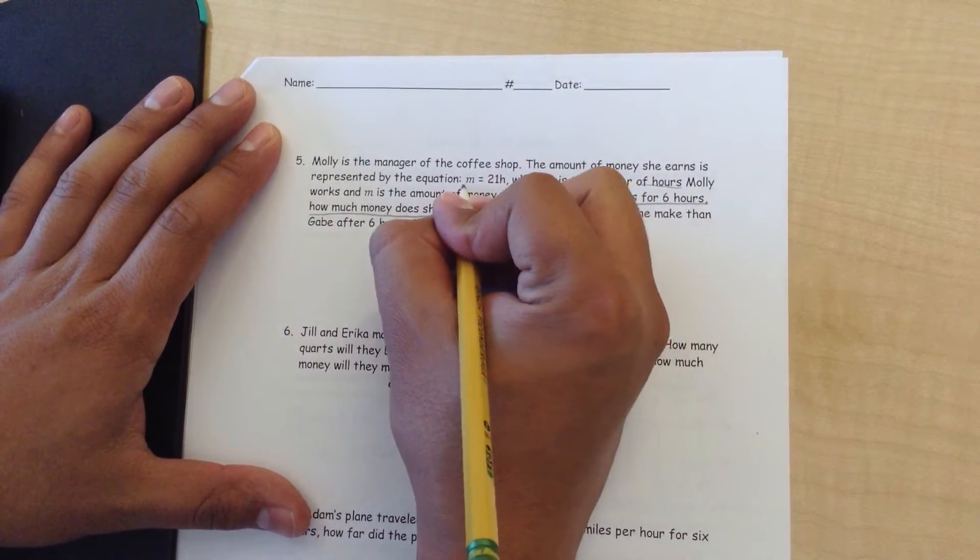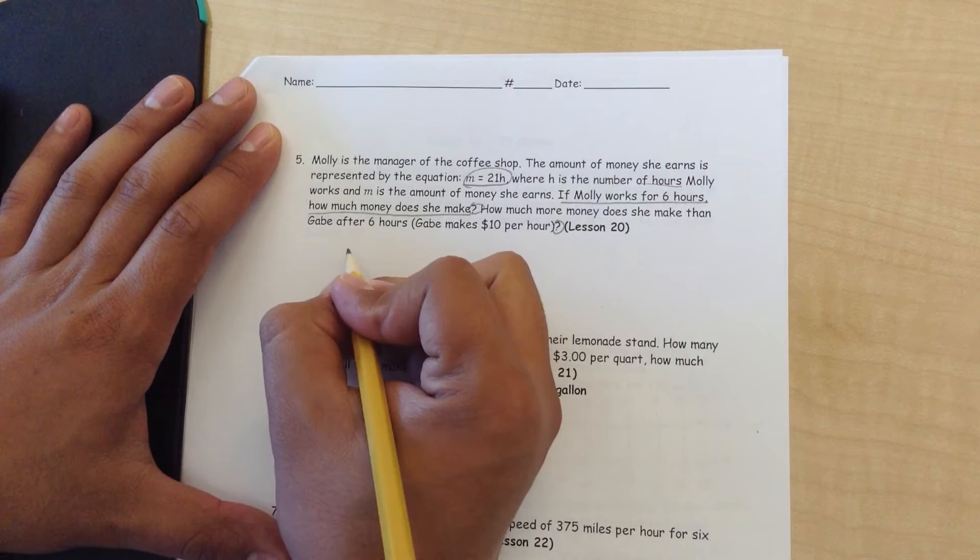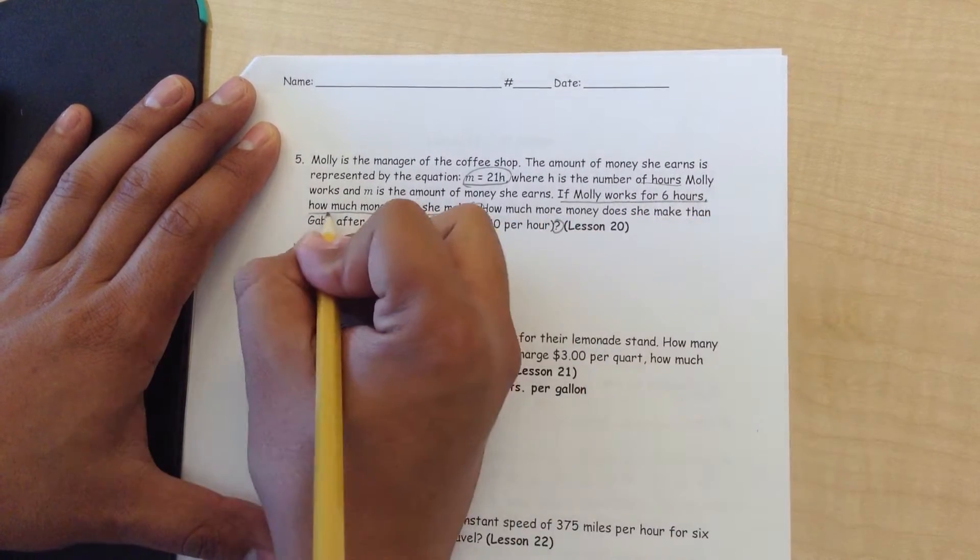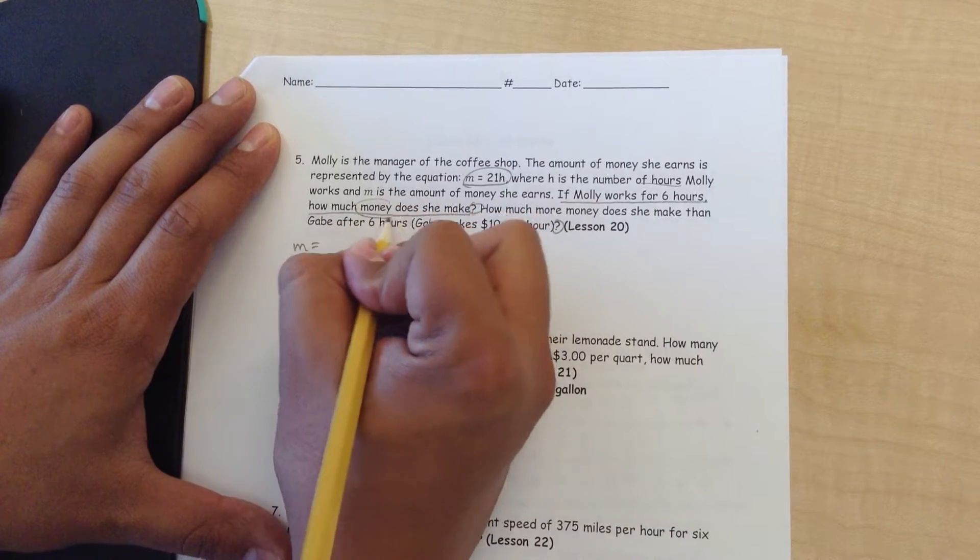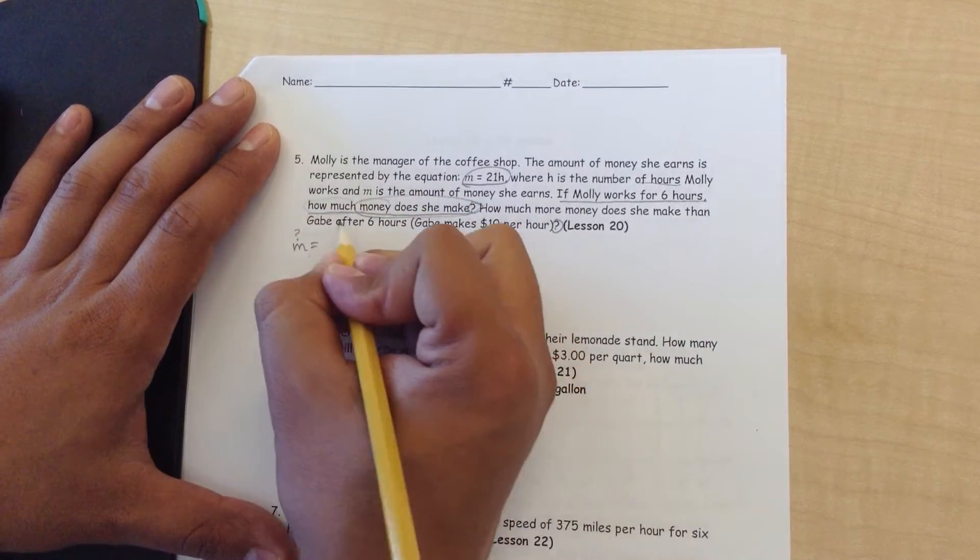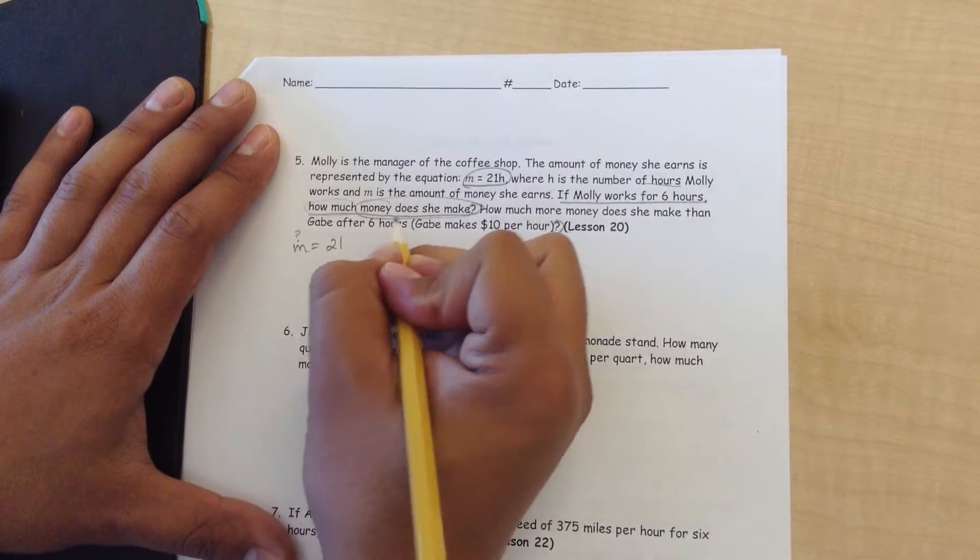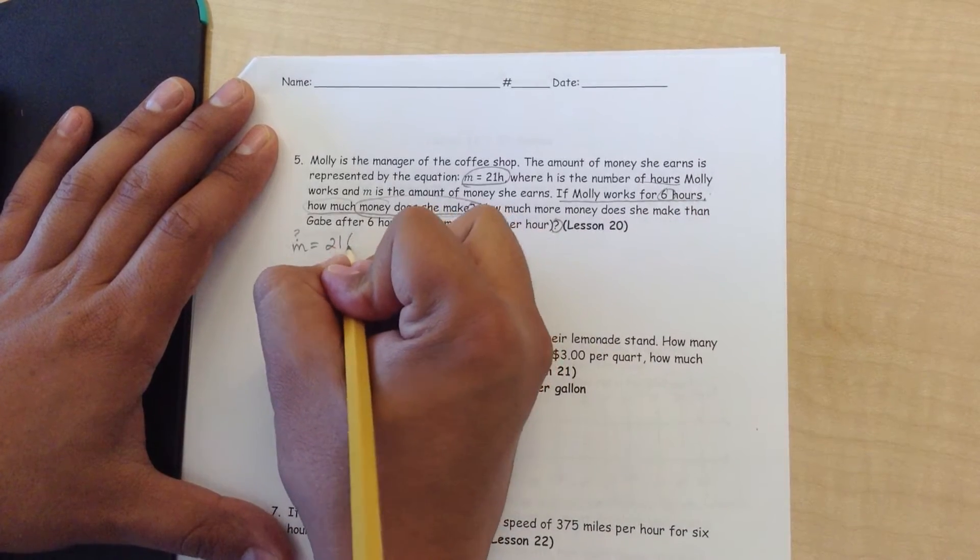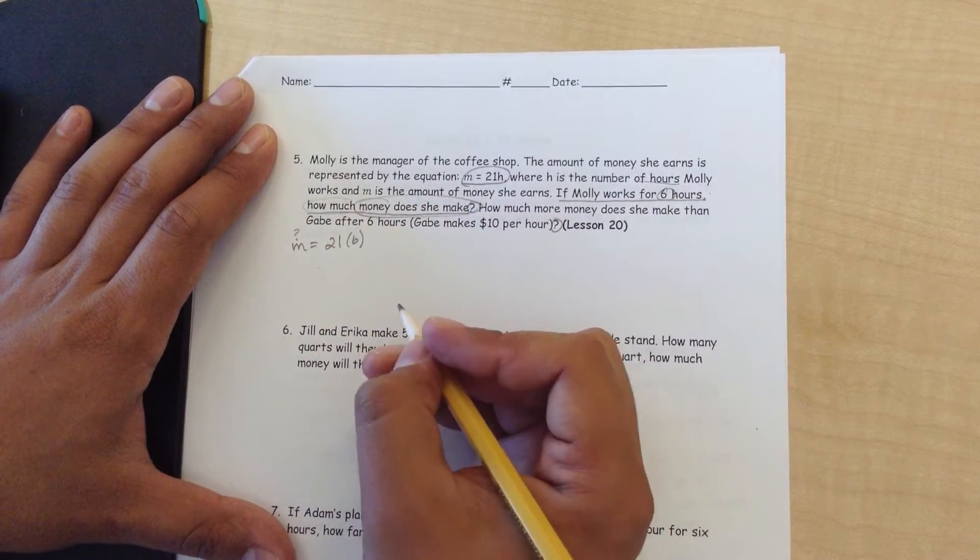So, this is the equation, and we need to plug in the numbers. It's asking if Molly works for 6 hours, how much money does she make? That's what we don't know yet. That's the unknown. We can put 21 in here, and H, how many hours does Molly work? 6. We can put 6 in parentheses, because that represents the H.